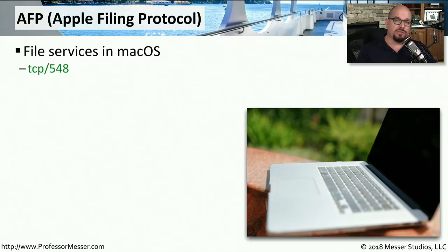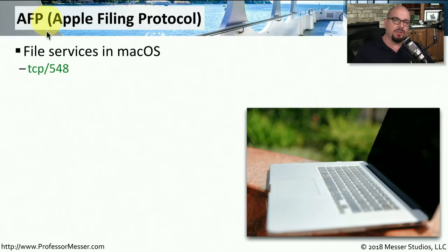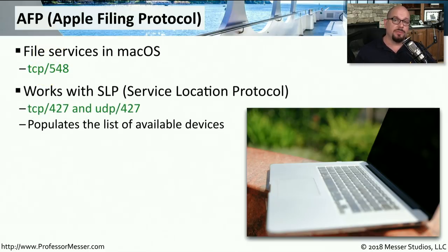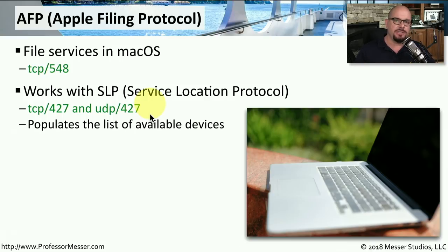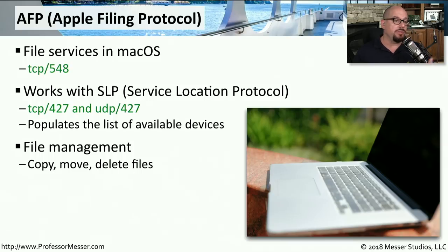Just as Windows has its own protocols for transferring files, macOS also has its own protocols — the Apple Filing Protocol, or AFP. These file services in macOS use TCP port 548. To view the list of available servers, you're probably going to use the Service Location Protocol, or SLP. SLP uses TCP port 427 and UDP port 427 to populate a list of available locations. Similar to SMB on Windows, the Apple Filing Protocol in macOS is also full-featured — you have the ability to view files, copy files, move files, rename files, and more.